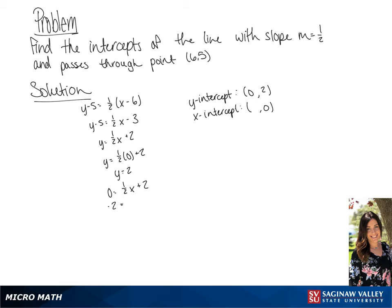Now we're going to subtract 2 from each side, giving us negative 2 equals 1 half x. And if we divide both sides by 1 half, we get x equals negative 4.